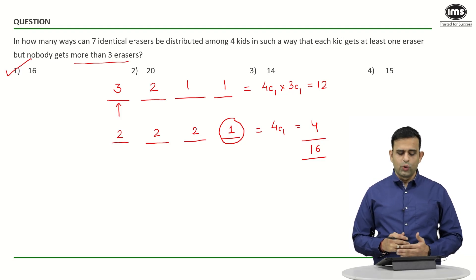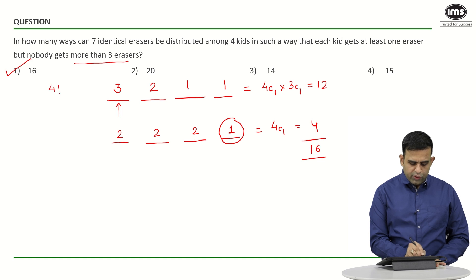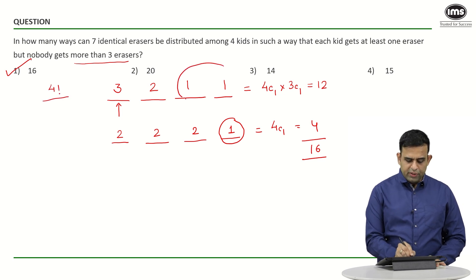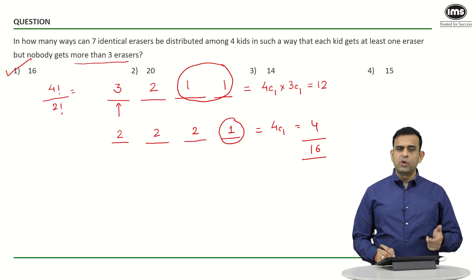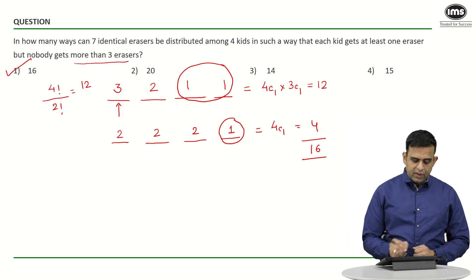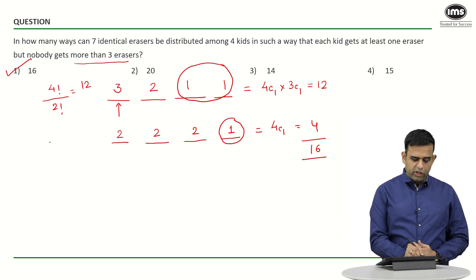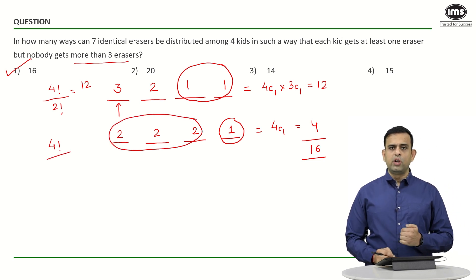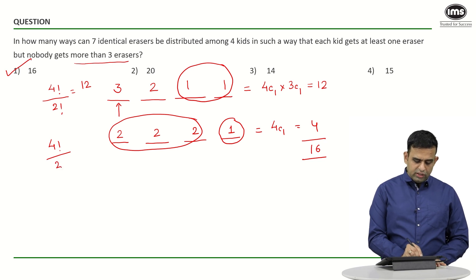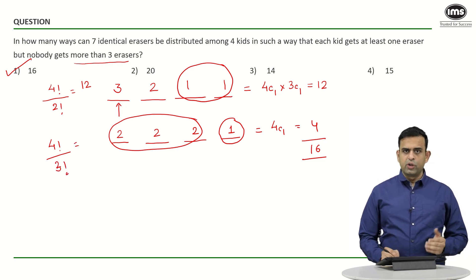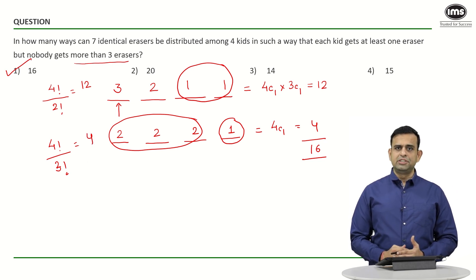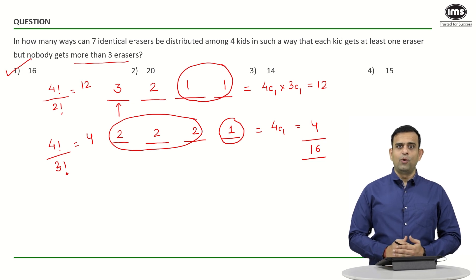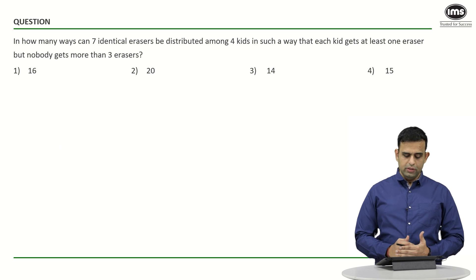Let's look at one more way to solve this. For Case 1, the distribution is 3-2-1-1 among four friends. That gives 4! divided by 2! (since two people get the same number), which is 24 ÷ 2 = 12. For Case 2, the distribution is 2-2-2-1. The total arrangements would be 4!, but three people each get two erasers, so we divide by 3!, giving 24 ÷ 6 = 4. Adding 12 + 4 gives 16, confirming the answer is option number one.